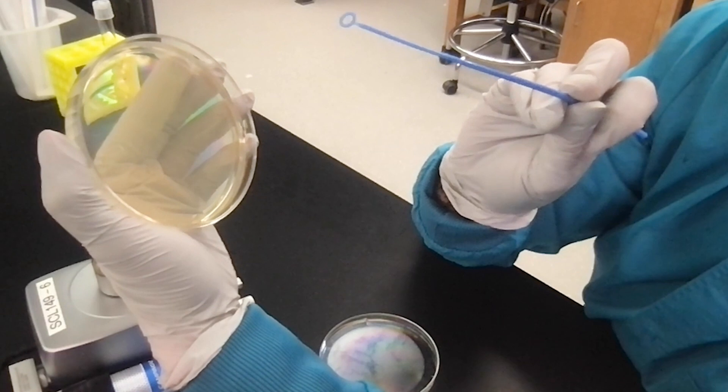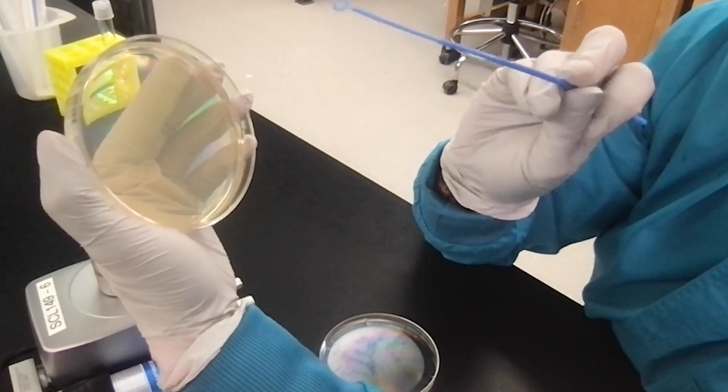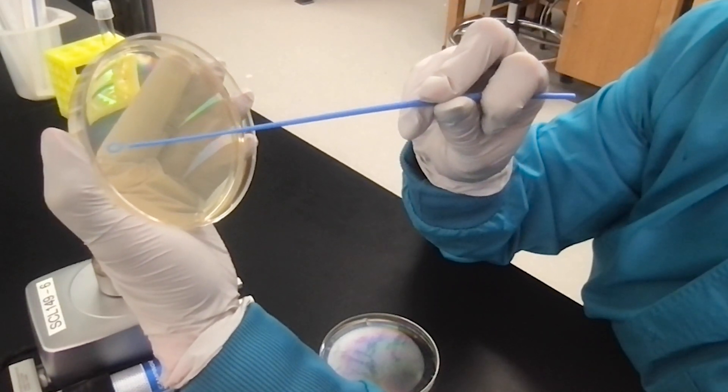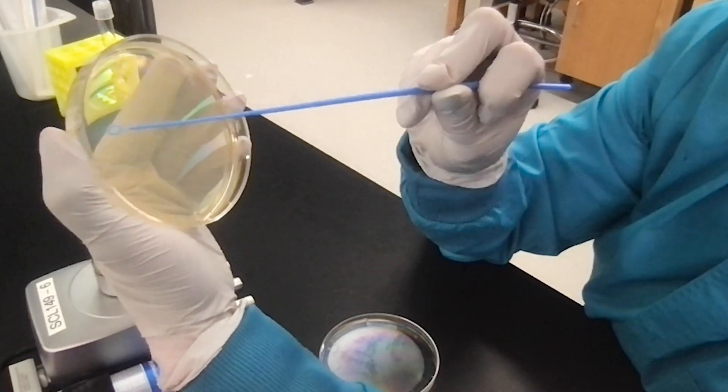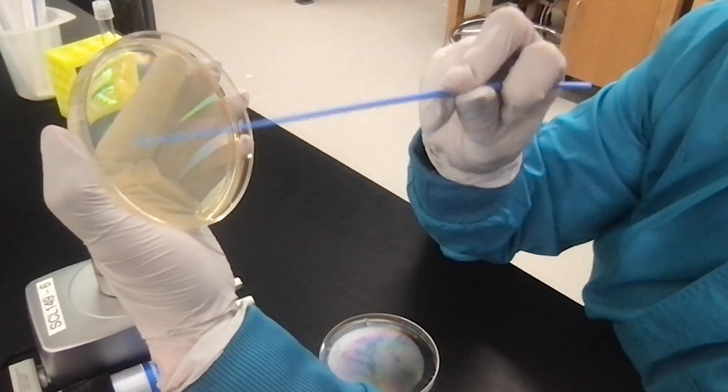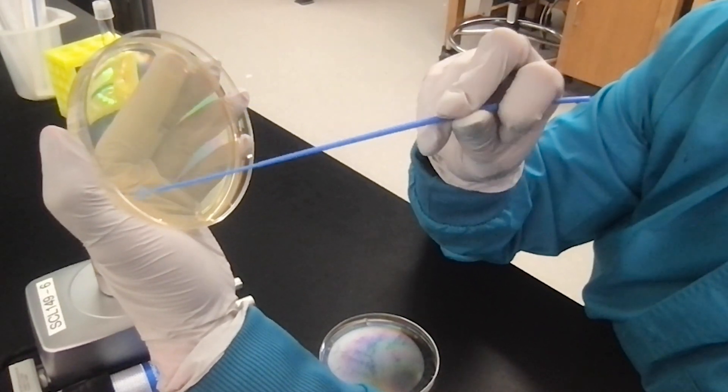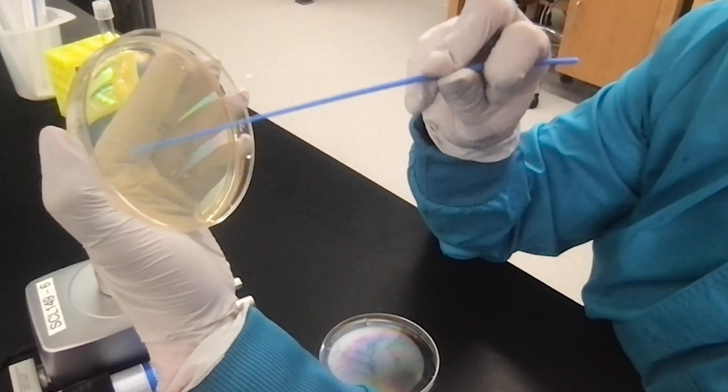I'm going to take my inoculation loop, which has hopefully some bacteria on it, and I'm going to do a little zigzag motion, or it's even okay if you do some parallel lines. Sometimes I prefer parallel lines, so I'm going to do that. But I'm going to drag it gently across the agar, gently so I do not puncture the agar.